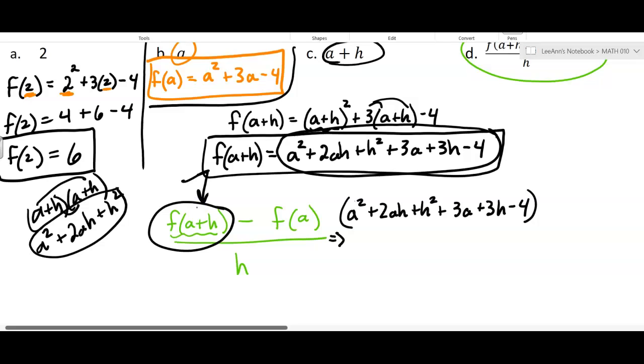Now, we want to subtract f of A. But we know what f of A is. We already did that, too. So f of A was A squared plus 3A minus 4. And then the whole thing is over H. The whole thing is over just a plain H. Not f of H. Just a plain H.